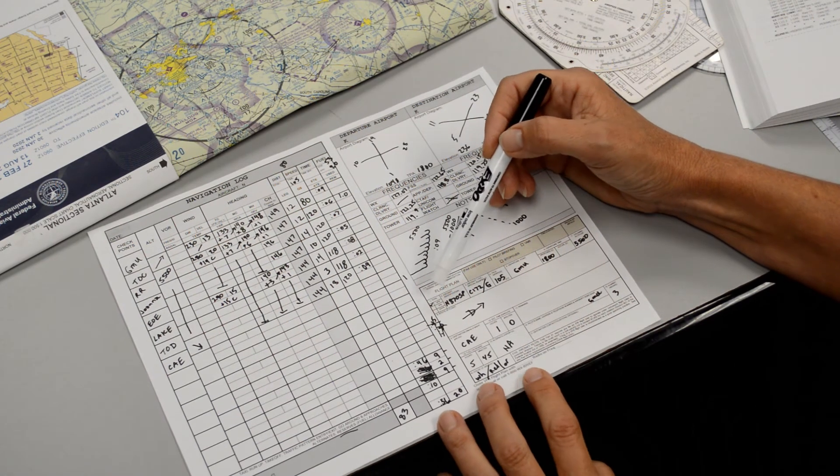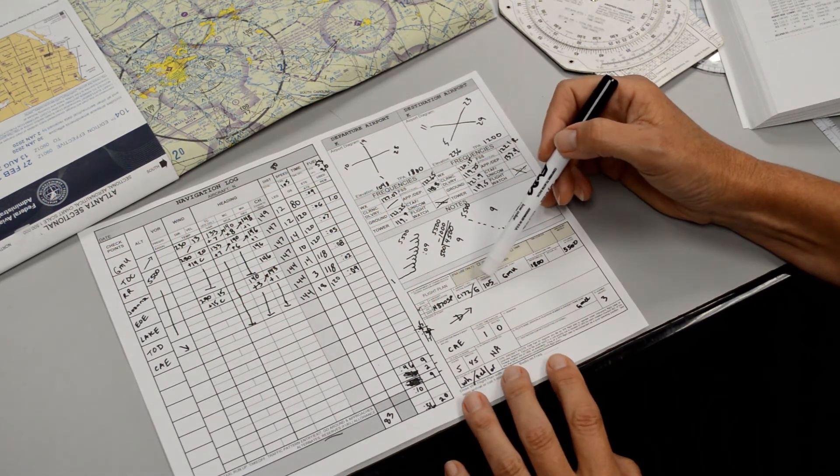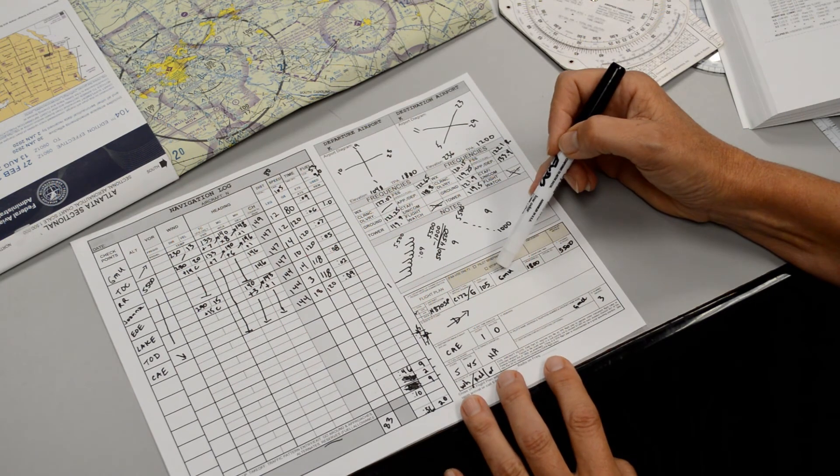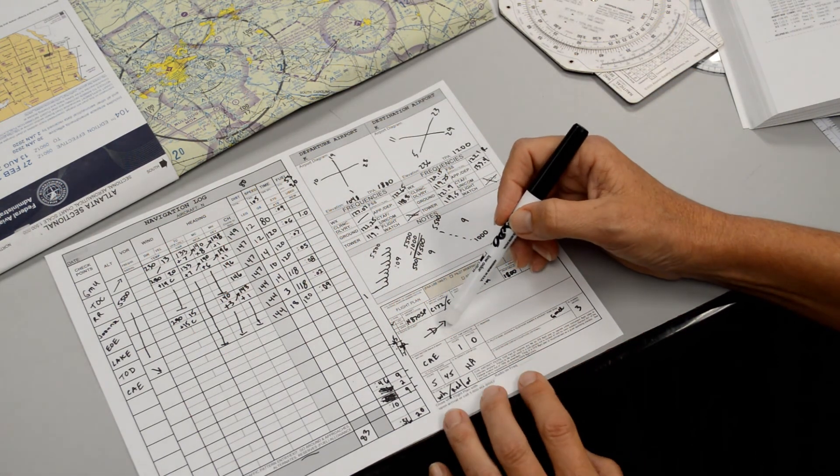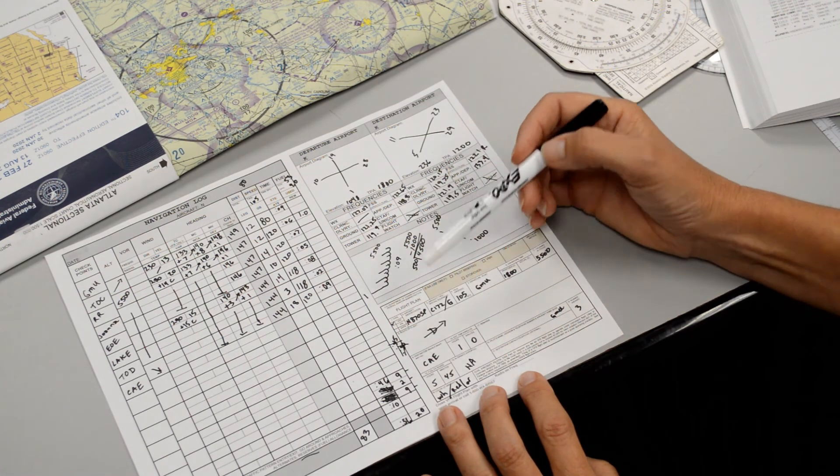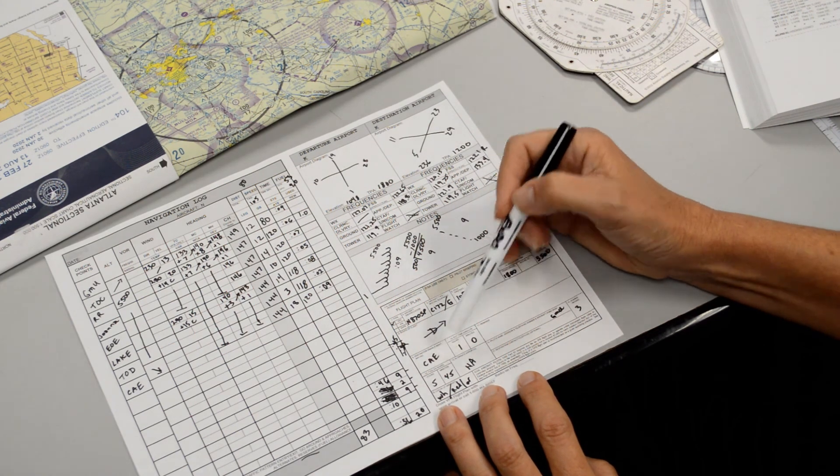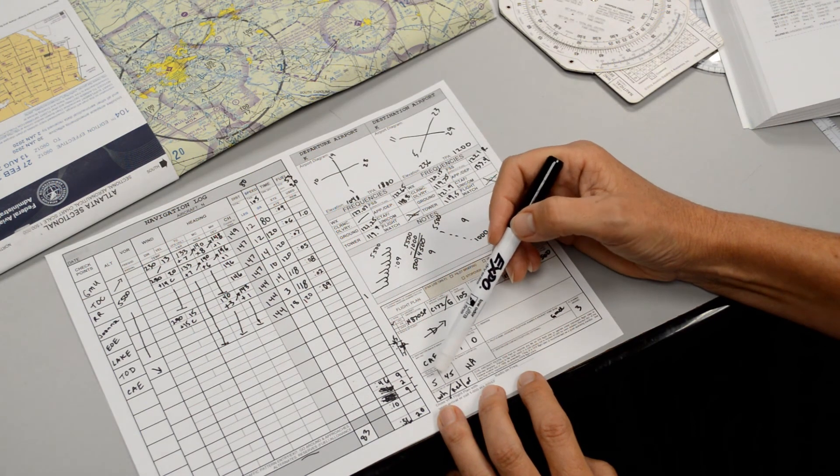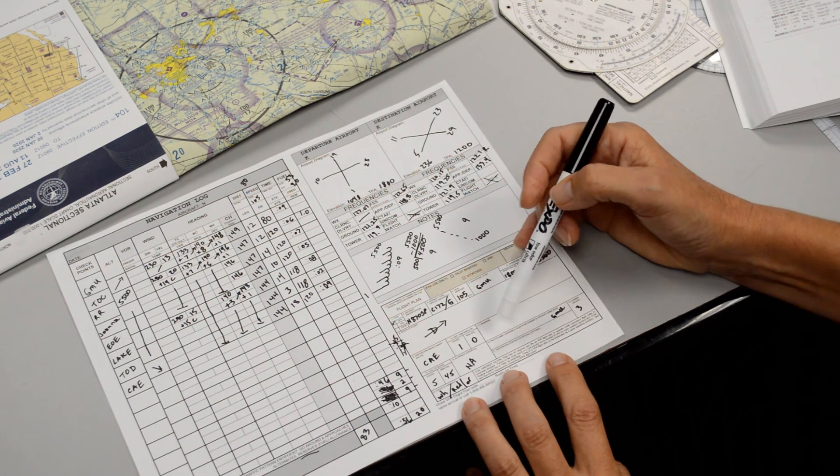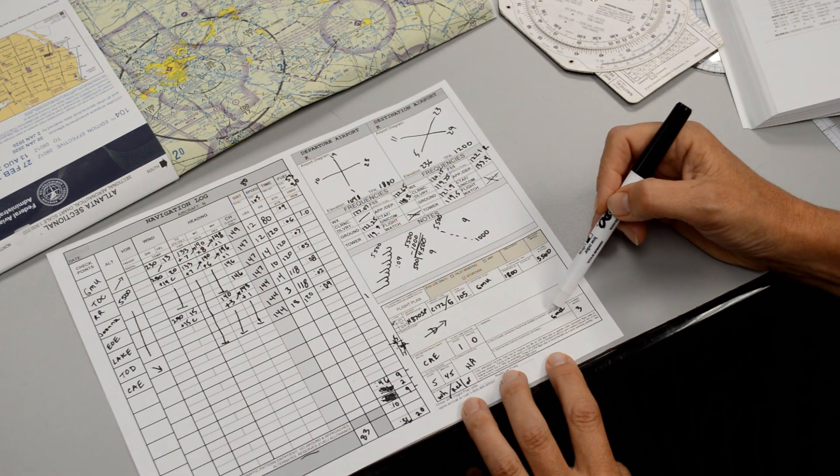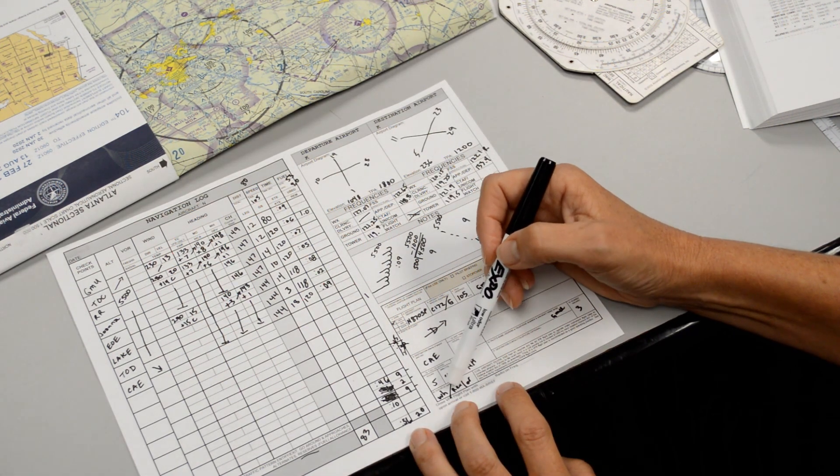Flight service station. This will be a VFR flight. November 8-7-0 Sierra-Papa, C-172 Slant Golf, 105, Golf Mike Uniform, 1800 Zulu, 5500, direct, Charlie Alpha Echo, 1 hour 0 minutes, student pilot or I could say training flight, 5 hours 45 minutes, no alternates, I'd give my name and my telephone number, we're based at Golf Mike Uniform, three souls on board. The color of the aircraft is white with red and orange.